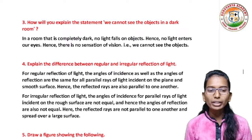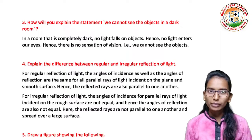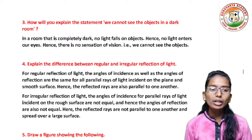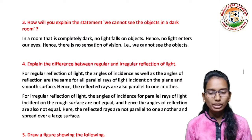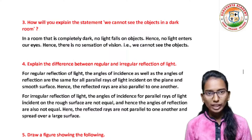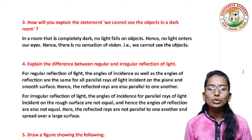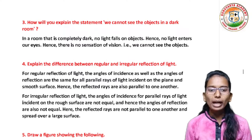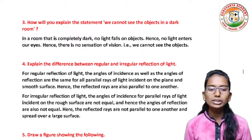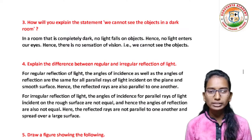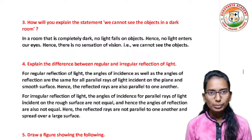The question is, how will you explain the statement: we cannot see objects in a dark room? In a room that is completely dark, no light falls on objects. Hence, no light enters our eyes. Hence there is no sensation of vision, that is we cannot see the objects.